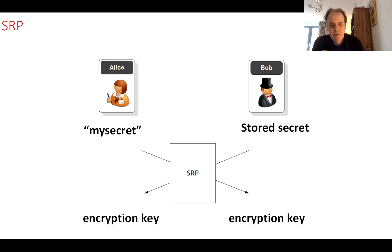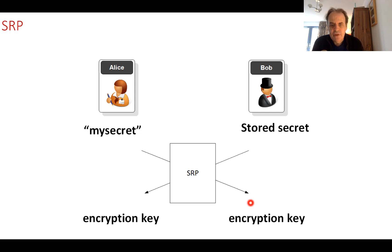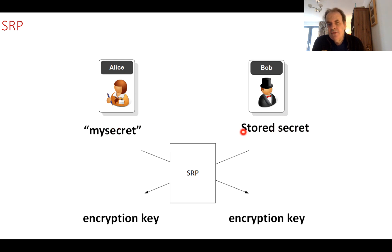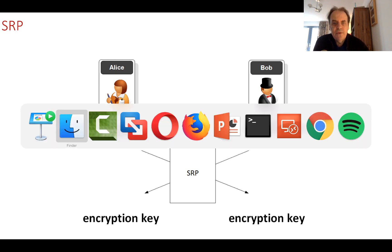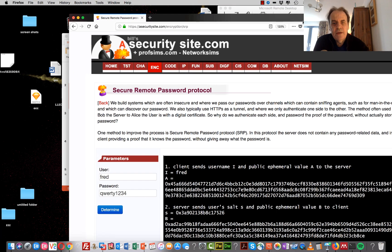What we need is a method that allows Bob the server to store some sort of secret, and for Alice not to give away her password but to prove that she still knows it. SRP is one such method, which is integrated in TLS and also into many Apple products. Alice and Bob exchange some details, derive the same encryption key, and the server can validate that Alice knows her secret without releasing any details of her password. SRP is a fairly complex protocol, as shown here.